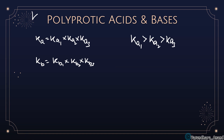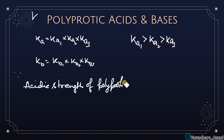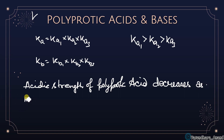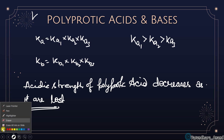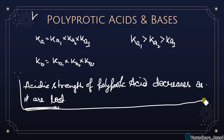The key point to be learned is that the acidic strength of a polyprotic acid decreases as H⁺ ions are lost. That is, as more H⁺ ions are removed, the acid becomes weaker. Make a box around this point - it is important.